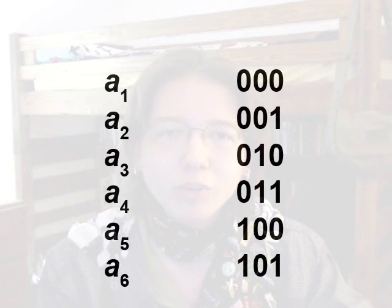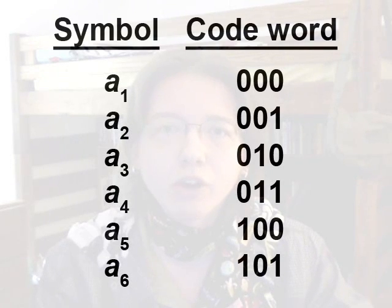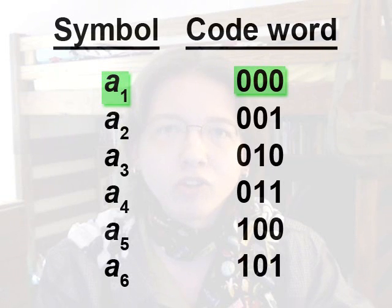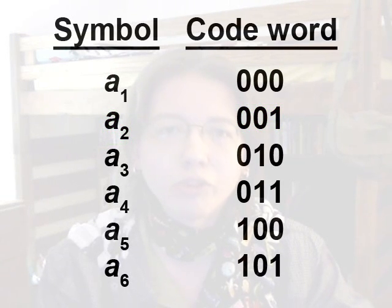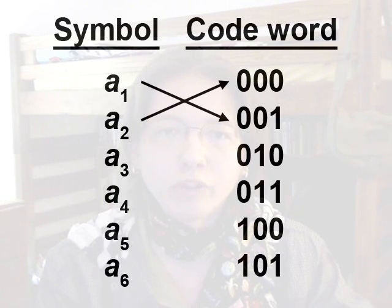When we assign a sequence of bits to represent a symbol, that sequence of bits is called a code word. For example, the code word for symbol 1 is 000, and the code word for symbol 2 is 001. And there's nothing special about that — we can mix and match code words and symbols. It would be perfectly okay if the code word for symbol 1 was 001 and the code word for symbol 2 was 000.